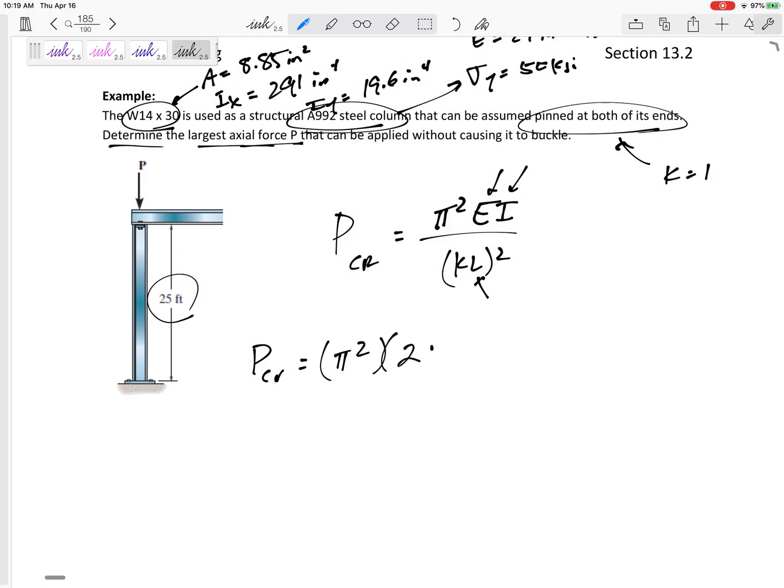The E, 29 times 10 to the 3 KSI. Let me really look at my units here. The I, 19.6.